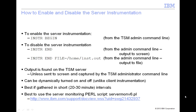To have the instrumentation write the output to a file, add the path and file name to the ending command like this: INSTR END file=/home/instr.out. This will write the output to the file instr.out in the /home directory on the TSM server.